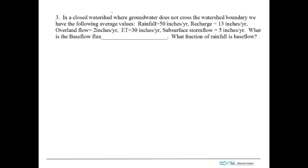Let's take a look at this problem. In a closed watershed, we don't have any groundwater crossing the watershed boundary. Here's our watershed in cross section. We have some rainfall, recharge, overland flow, ET, and subsurface storm flow. And we're asked for the base flow.